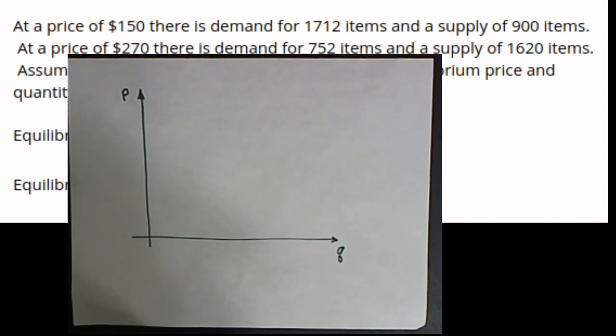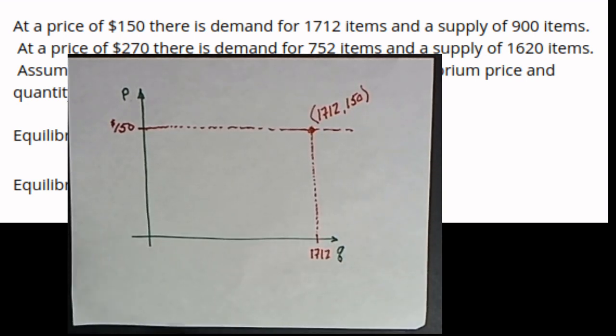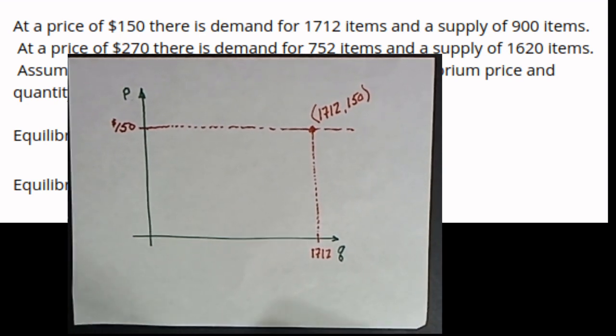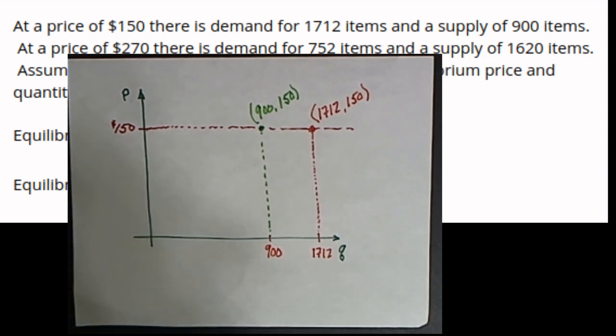In this problem we know that at a price of $150 there's a demand for 1,712 items and a supply of 900 items. That means the point 1,712, 150 is a point on the demand curve. And similarly the point 900, 150 is a point on the supply curve.